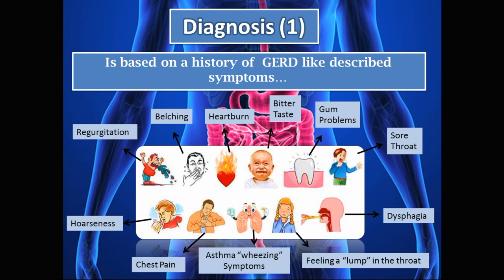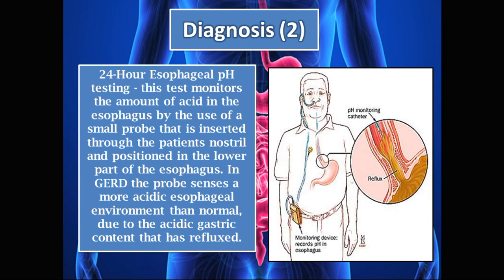How do we make a diagnosis of GERD? We start with the history of GERD-like symptoms, which include regurgitation, belching, heartburn, bitter taste, gum problems, sore throat, dysphagia, a lump sensation in the throat, asthma or wheezing-like symptoms, chest pain, and hoarseness.